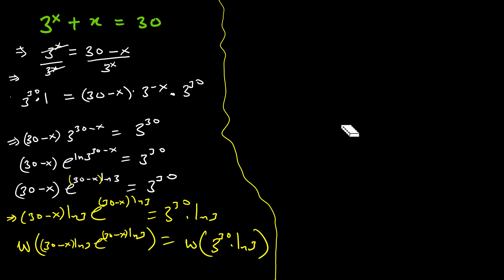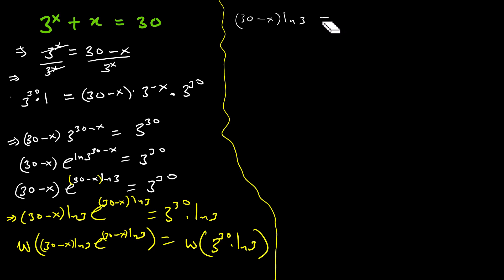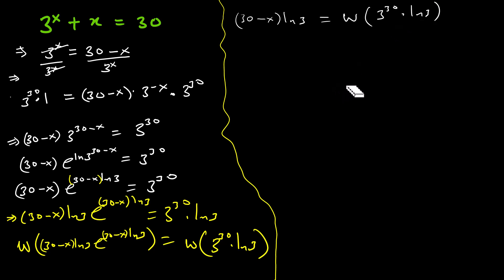Now we can take the Lambert W function. On the left-hand side, it is of the form: something times e raised to that same something. So the Lambert W of that gives us 30 minus x times ln of 3, equals W of 3 to the power 30 times ln of 3.